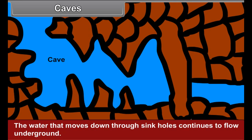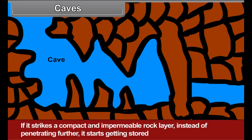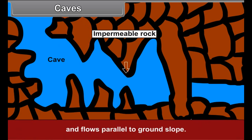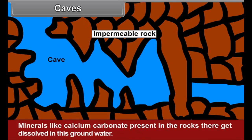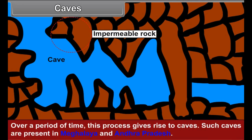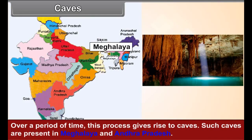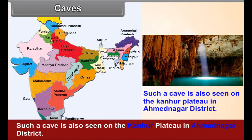Caves: The water that moves down through sinkholes continues to flow underground. If it strikes a compact and impermeable rock layer, instead of penetrating further, it starts getting stored and flows parallel to the ground slope. Minerals like calcium carbonate present in the rocks get dissolved in this groundwater. Over a period of time, this process gives rise to caves. Such caves are present in Meghalaya and Andhra Pradesh, and also on the Kanhor Plateau in Ahmadnagar district.